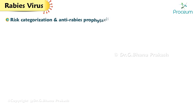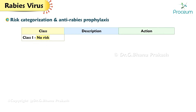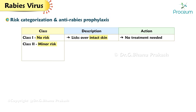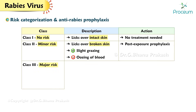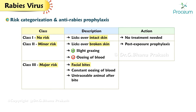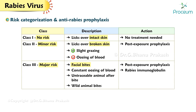Risk categorization and recommended anti-rabies prophylaxis: Class 1 (no risk) — licks over intact skin; no treatment needed. Class 2 (minor risk) — licks over broken skin or slight grazing with no oozing of blood; post-exposure prophylaxis should be started. Class 3 (major risk) — facial bites, constant oozing of blood, untraceable animal after bite, or wild animal bites; post-exposure prophylaxis and immunoglobulin should both be started.